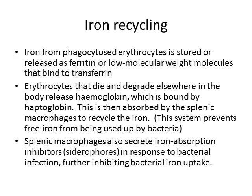What happens to the iron in our red blood cells from hemoglobin once it's phagocytosed? Iron from these phagocytosed erythrocytes is stored in the macrophages or else released as ferritin, or alternatively as a low molecular weight molecule that binds to transferrin. The key thing to know is that it binds to transferrin, which is our transport protein for iron.